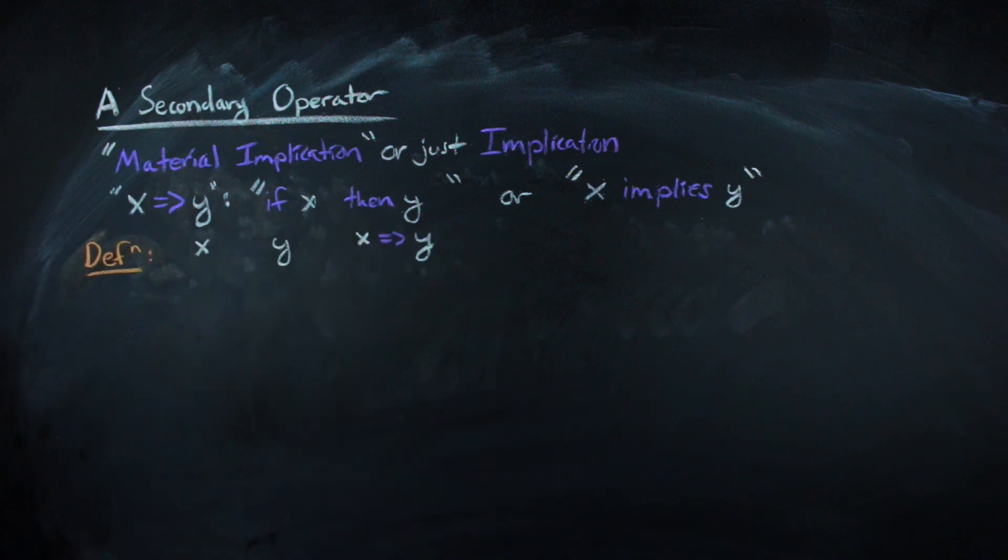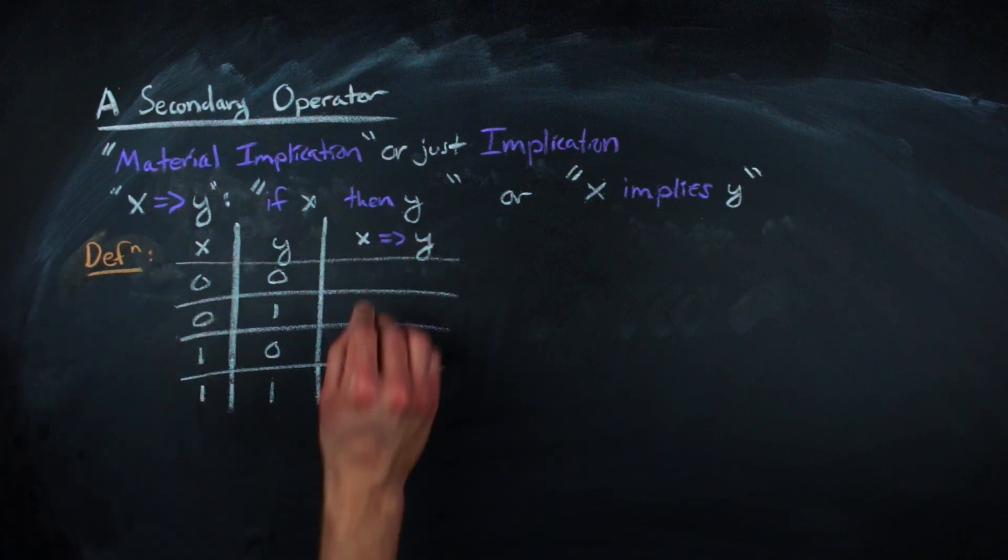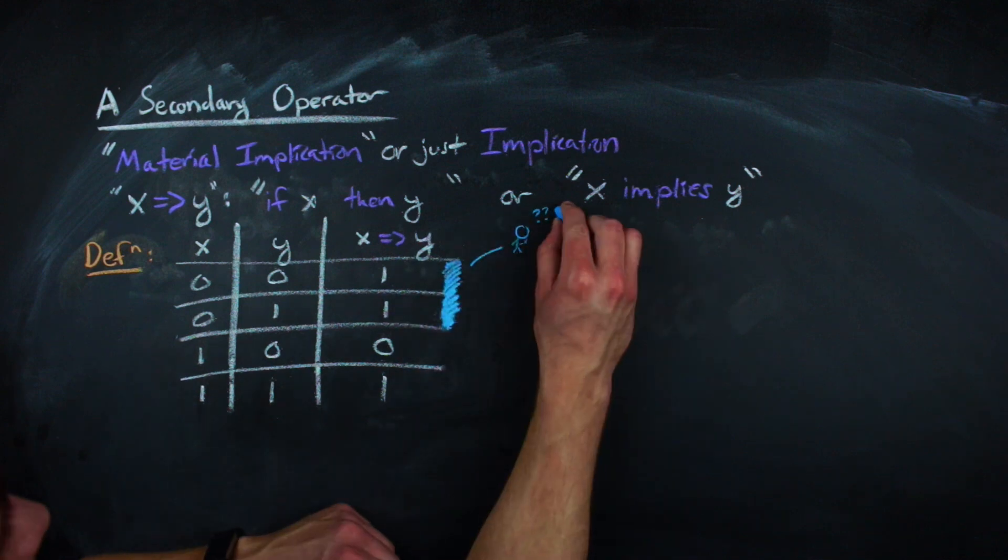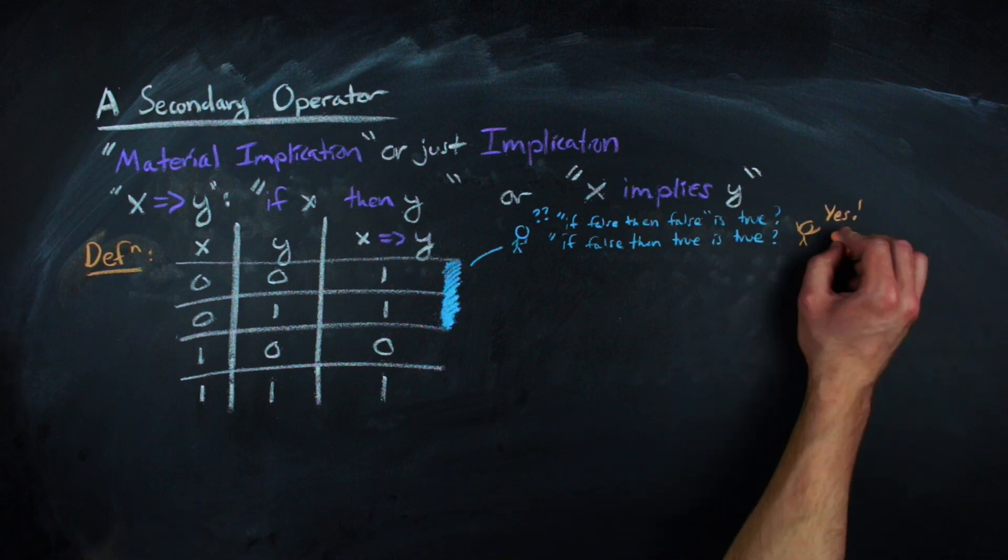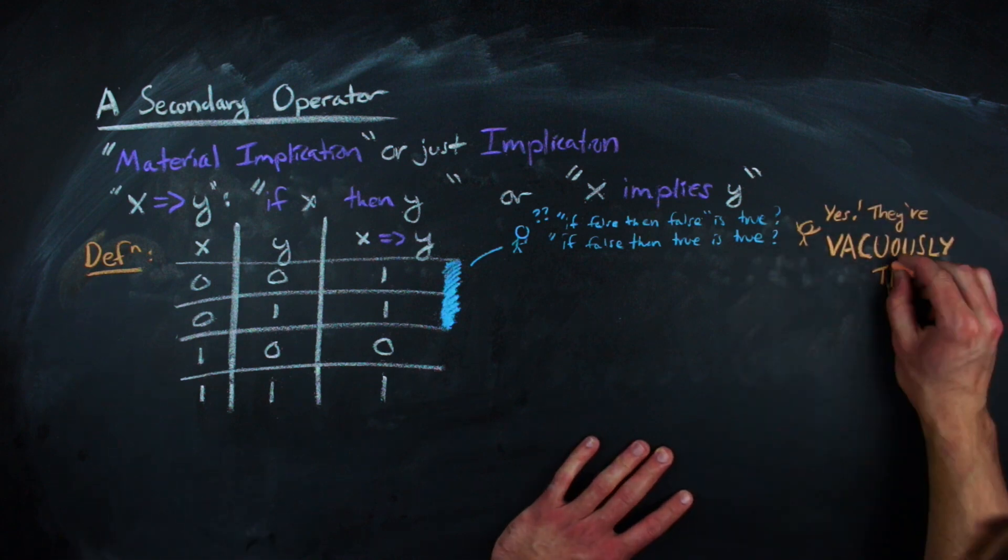Implication is defined by the following truth table. And these rows usually trip people up, the ones where x is false. In this situation, we have something that is deemed vacuously true.